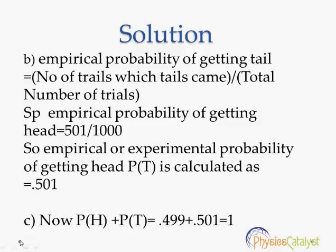We see that probability of getting head plus probability of getting tail equals 0.499 plus 0.501, which is equal to 1. So the third question is also answered here.